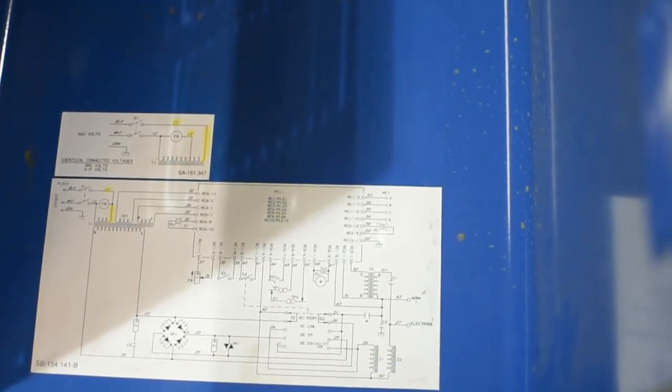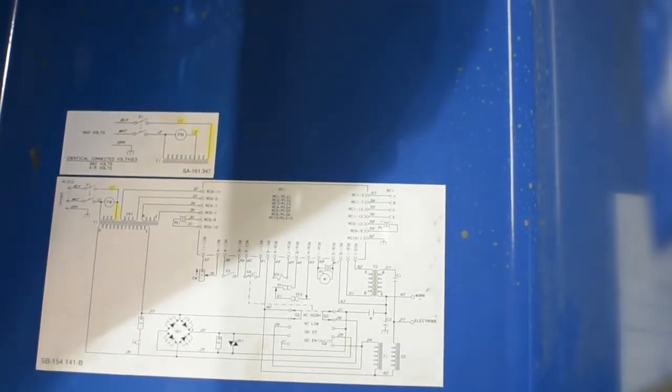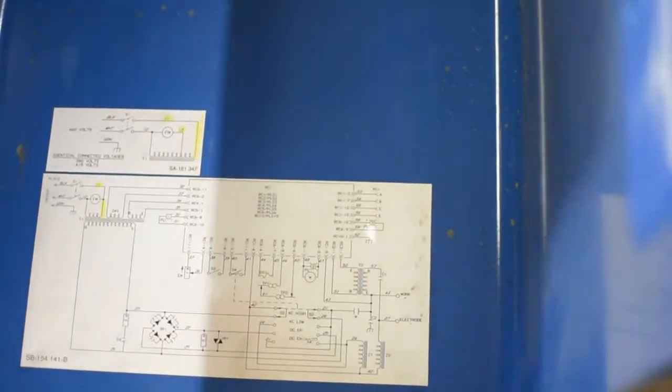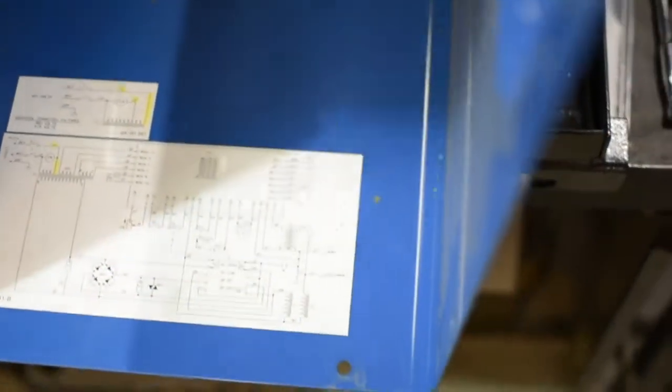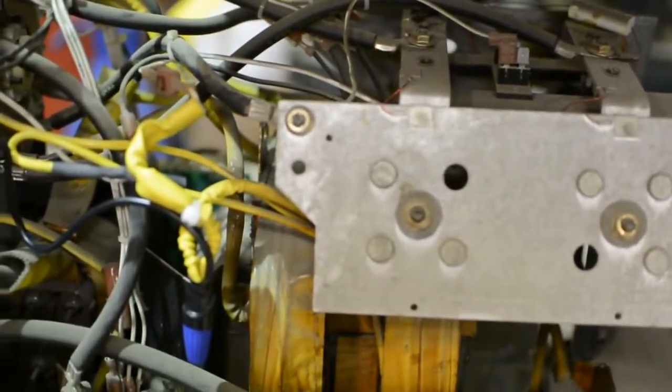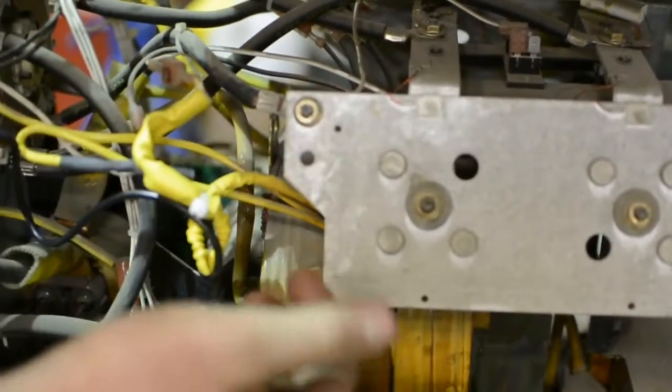200, 230, 240, 430, 460, it doesn't matter. What they did is they installed the same transformer in every unit and then just offered taps so that they could buy a whole bunch of the same transformer and re-tap it depending on how you ordered it.